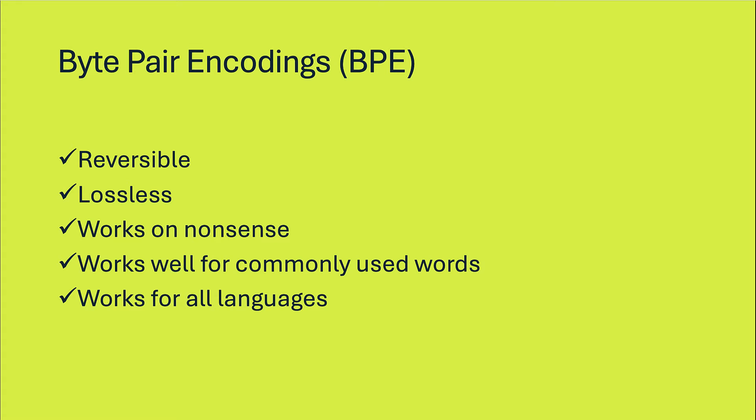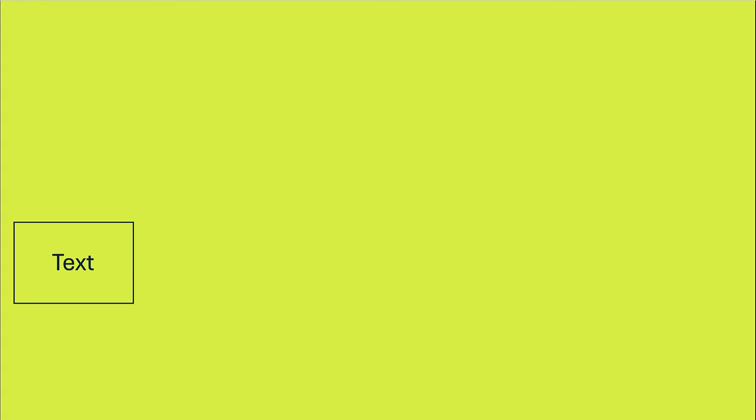So the system is to take the text, give it to a byte-pair encoder, which uses an encoding to convert it into a list of tokens, which could be, if you wanted to, turned back into text at a later date.